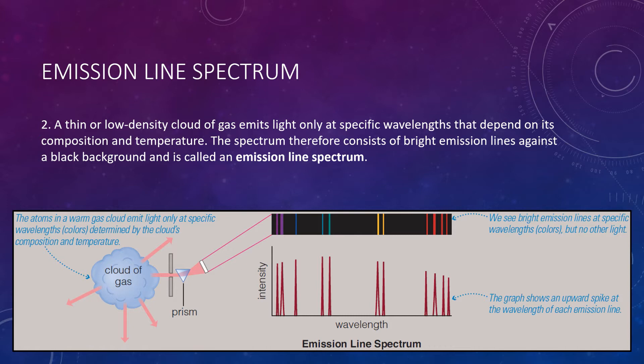The second type is when you have a thin or low-density cloud of gas that emits light only at specific wavelengths, depending on its composition and temperature. The spectrum consists of bright emission lines against a black background and is therefore called an emission line spectrum. If you have a gas giving off its own light at specific wavelengths and pass it through a prism, you'll see only specific bands of color — sudden jumps or peaks in intensity at those wavelengths, while the rest is dark.